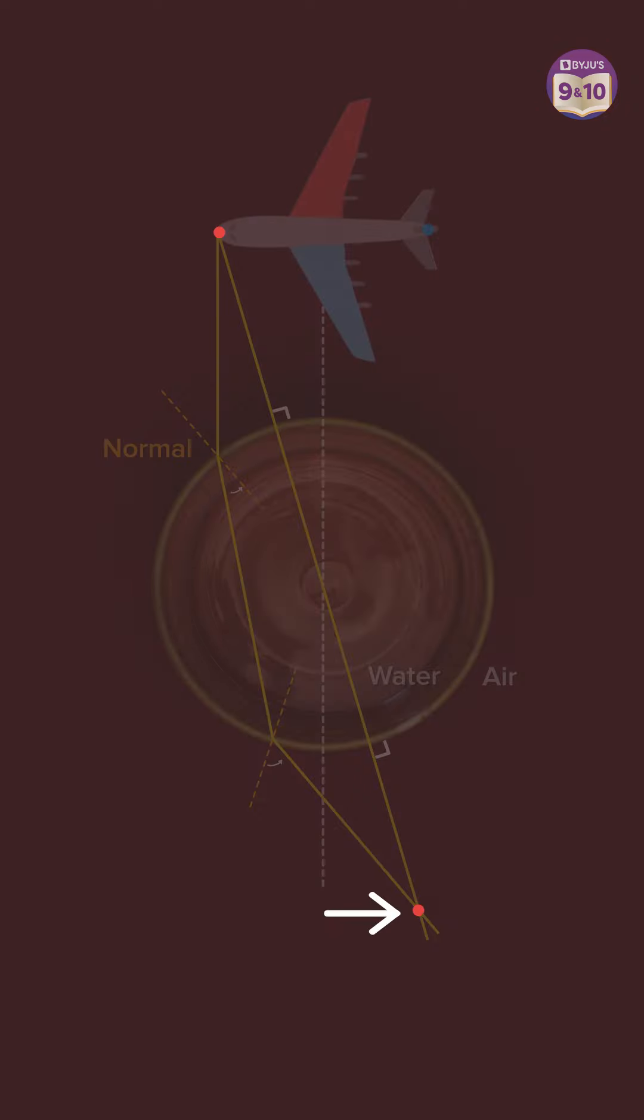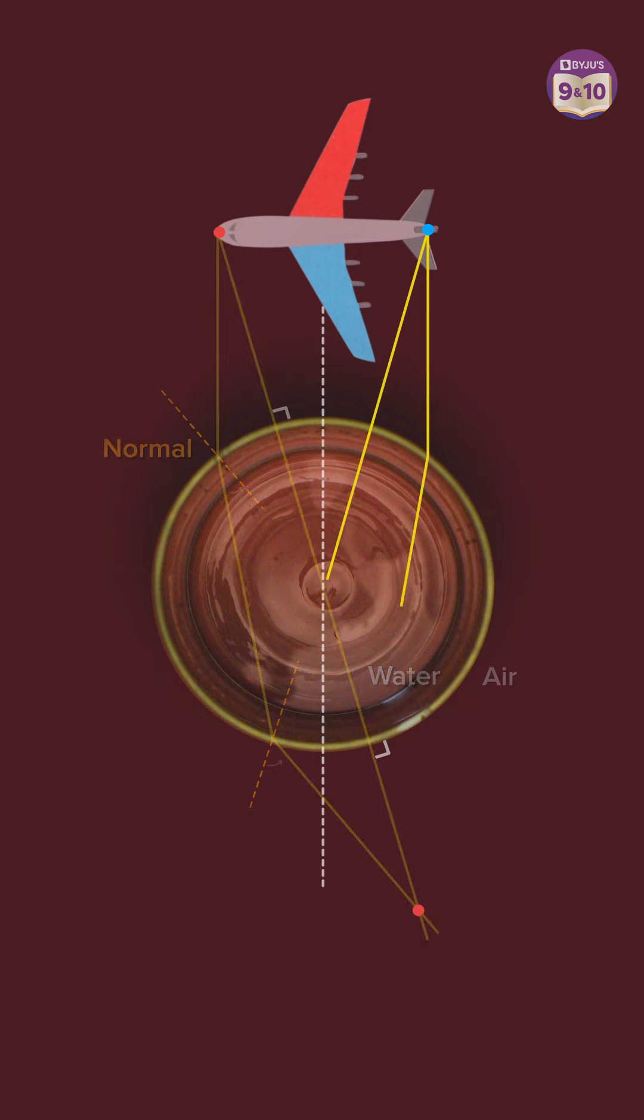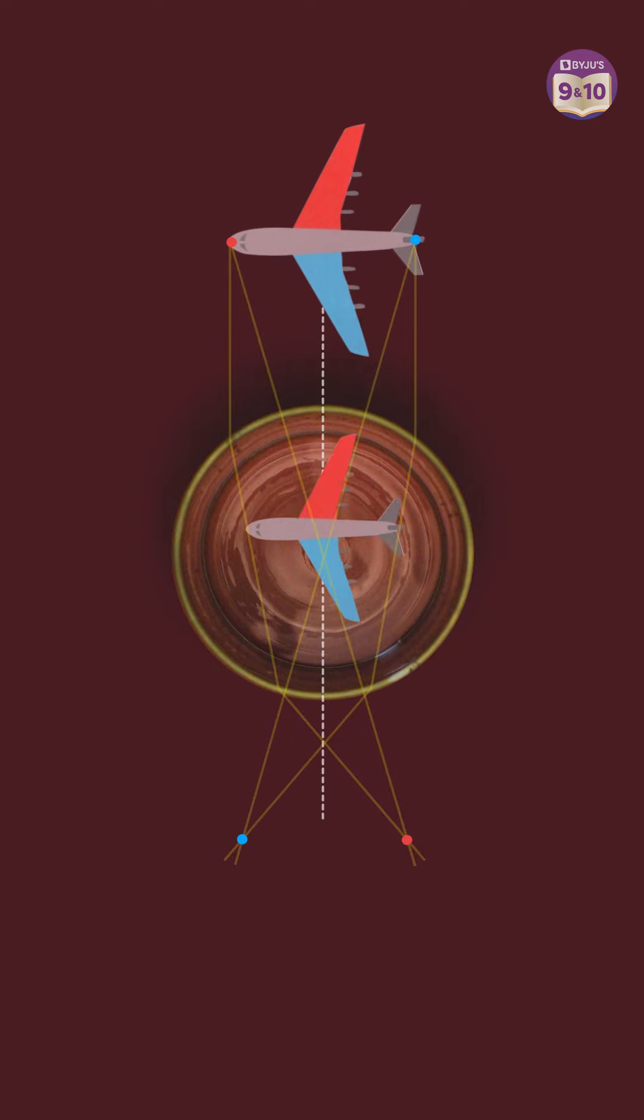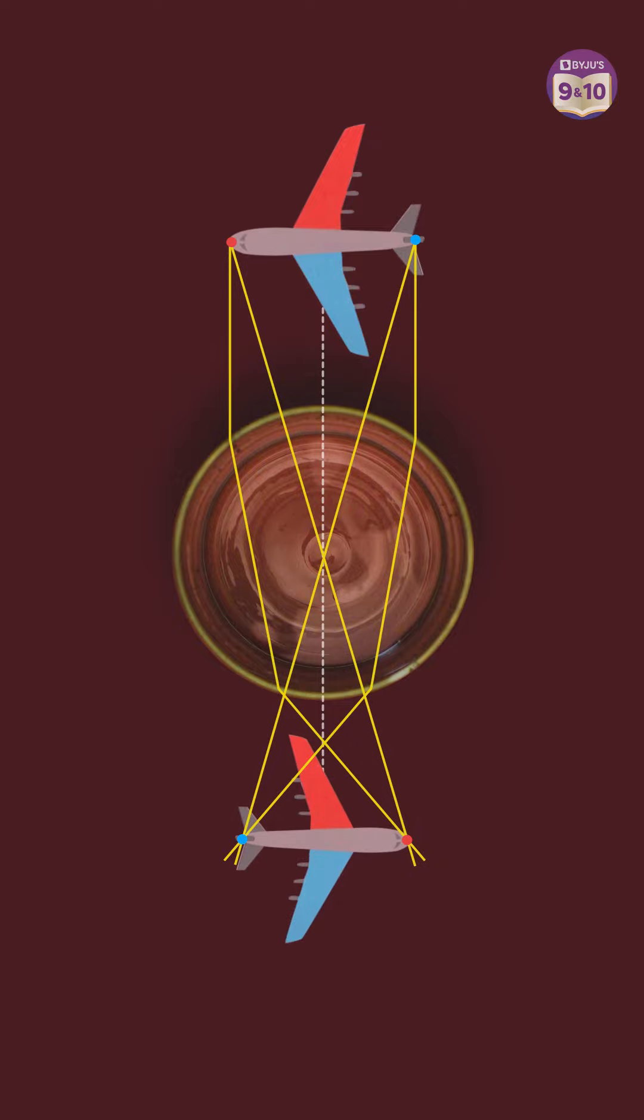Notice how the point is flipped to the other side. The same happens to the light rays moving from the tail of the plane. The flip position of the points results in an inverted image.